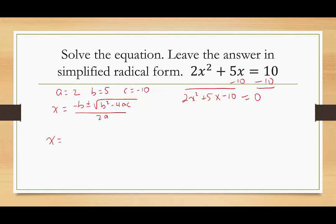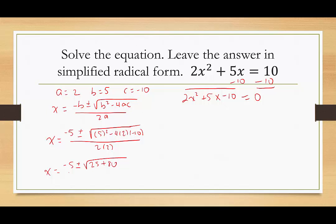Now we're going to plug in. Negative of 5 is negative 5, plus or minus the square root of 5 squared minus 4 times 2 times negative 10, all over 2 times 2. This would be x equals negative 5 plus or minus the square root of 25. Then we have negative 4 times 2 is negative 8; negative 8 times negative 10 is positive 80, so plus 80, over 2 times 2 which is 4.